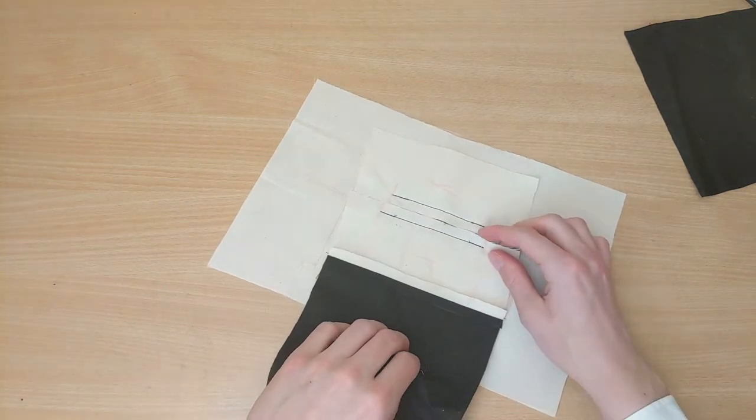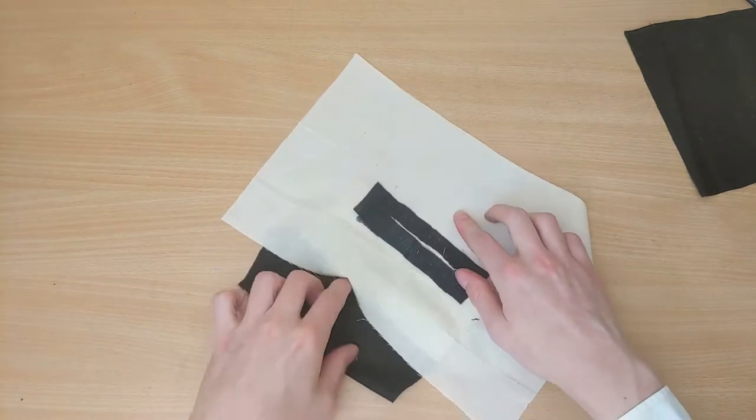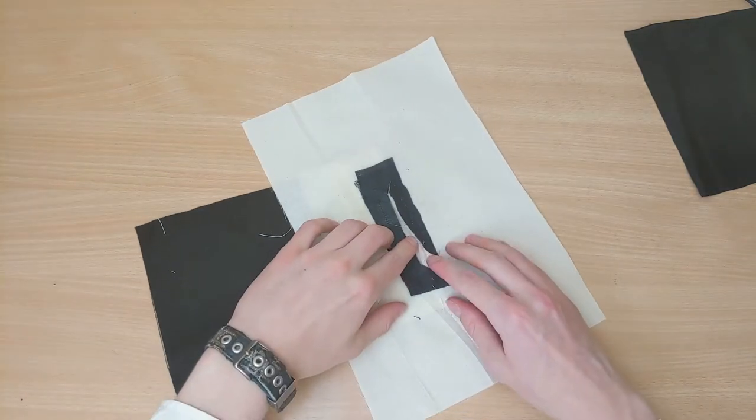Fold the welt upwards, and from the back, open up the seam. Iron it open. Then pull open the mitres and iron them open as well.